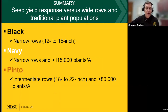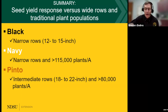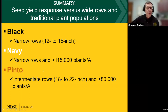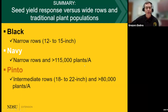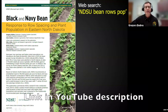Here's a quick summary of what we found with the three market types. With blacks, we didn't see a yield response with increasing plant populations, but we did see a yield response with narrow rows. With navies, we saw a yield potential increase with narrow rows and with established early season plant populations exceeding 115,000 plants per acre. With pintos, intermediate rows and plant populations greater than 80,000 gave us our highest yield potential in these studies. We have publications with the black and navy work as well as the pinto work.